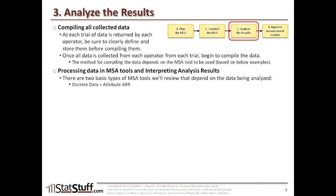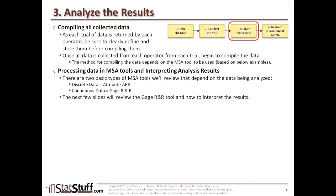The type of tool depends on whether you have discrete data or continuous data. If it's discrete data, we're going to use the attribute ARR test; if it's continuous data, you can use the gauge R&R test. For this particular study, we're going to look at the gauge R&R tool and how we can interpret the results.